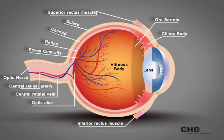The ciliary body is also made up of the ciliary muscle. The posterior chamber is a narrow space behind the peripheral part of the iris and in front of the suspensory ligament of the lens and the ciliary processes.